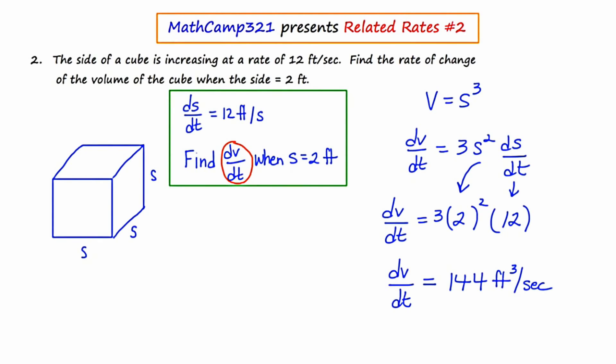Another way to think about the units would be to actually plug in the units into the formula. So if we look at this s squared, our s is 2 feet. And if we plugged in feet here, we'd end up getting feet squared. And then the ds/dt would introduce another feet per second. So you get your cubic feet per second there.